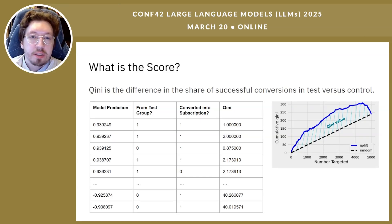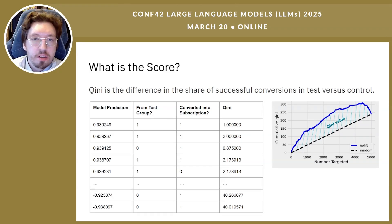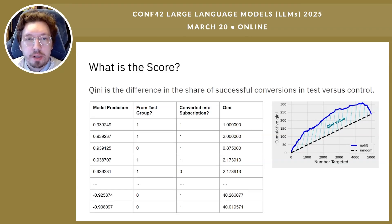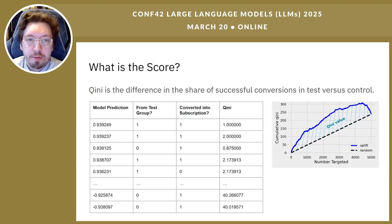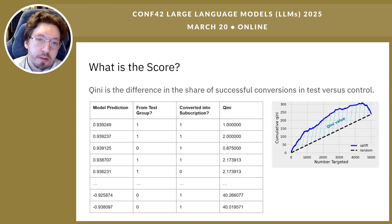Gini measures the difference in successful conversions between the test and control groups. For the total sample, the difference is static. To leverage our model's prediction, we sort users by predicted uplift and compute it step by step. Plotting this produces the Gini curve, which shows the potential extra gain from targeting. We compare that curve to a random baseline — the area between them is our key metric.